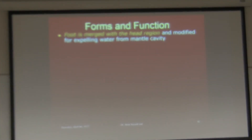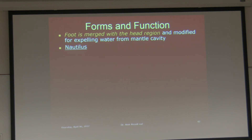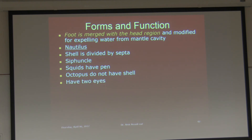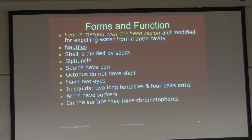The foot is merged with the head region and modified for expelling water from the mantle cavity. Nautilus is the name of the genus; the shell is divided by septa in nautilus. Siphuncle connects the septa together — fluid percolates through it, allowing the animal to float. Squids have a pen — the pen is the modified shell inside the head region that protects the brain. Octopus do not have a shell or pen at all. They have two eyes, and squids have two long tentacles and four pairs of arms with suckers.